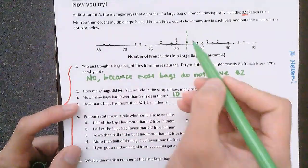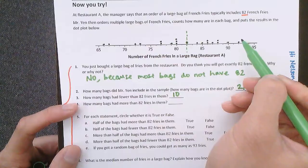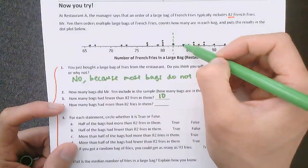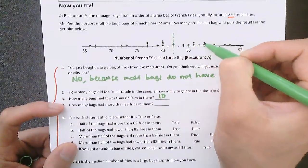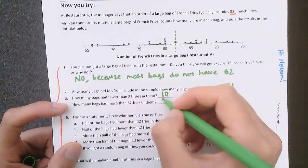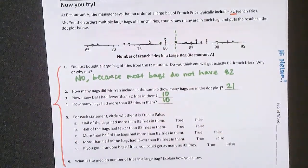How many had more than 82? That's everything on this side. 1, 2, 3, 4, 5, 6, 7, 8, 9, 10, also 10. Okay.